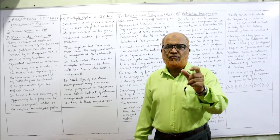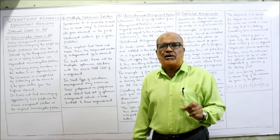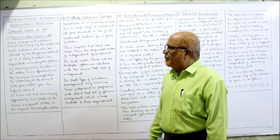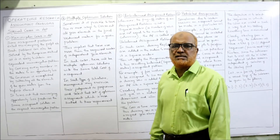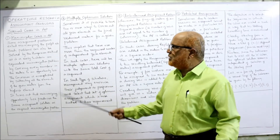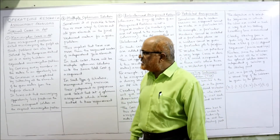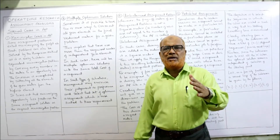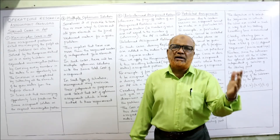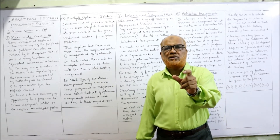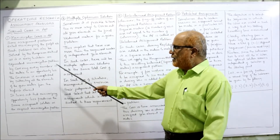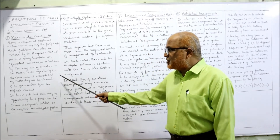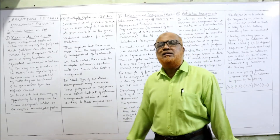That optimum assignment for opportunity loss will be the same as the assignment for profit maximization. Some assignment problems entail maximizing profit, maximizing sales, etc. Such problems can also be solved by the Hungarian method, as it is easy to obtain an equivalent minimization problem. We convert the maximization problem into an equivalent minimization problem by converting profit into opportunity loss. This conversion is accomplished by subtracting all the elements of the given matrix from the highest element.